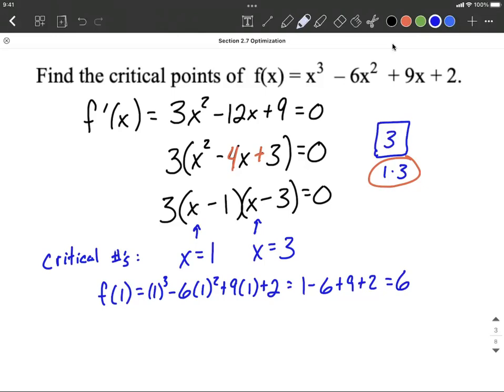All right, we also want to do the same thing with our 3, so let's go ahead and replace each one of the x's in the original function with 3. And then we'd want to simplify this down. This one works out to be 2. So our critical points